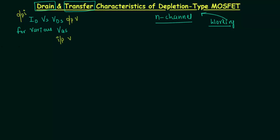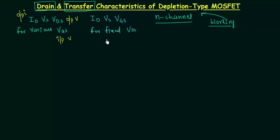Transfer characteristics is the plot between the output current ID and the input voltage VGS for a fixed VDS. Now let us begin with the drain characteristics.